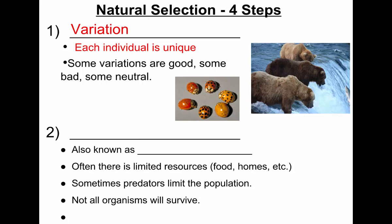So we have these variations, and we also know in nature there is a constant struggle for survival. There's competition for many things — competition to get enough food to survive, to find a mate, to find a living space, to avoid predators. There's all these different factors that go into the survival of one individual, and there are often limited resources, limited food, limited homes.